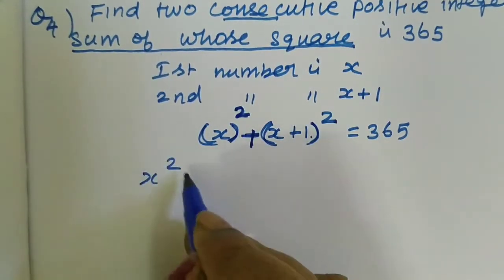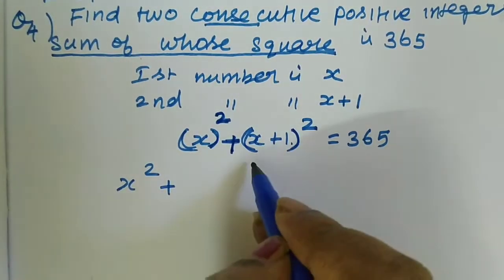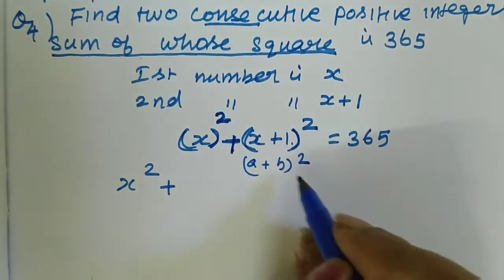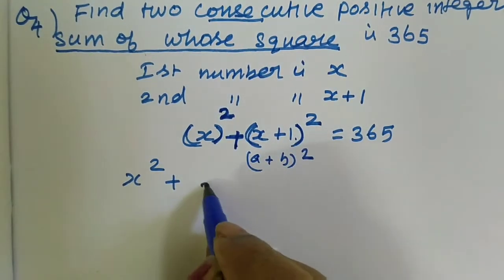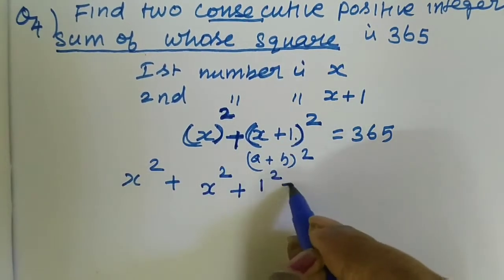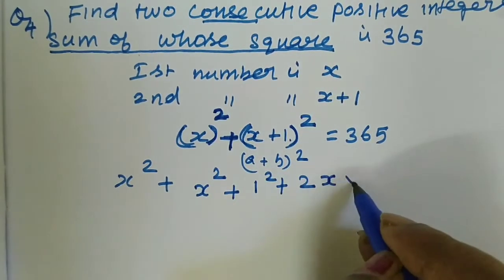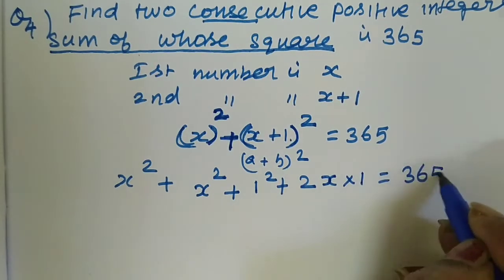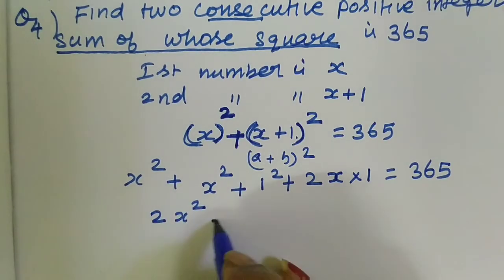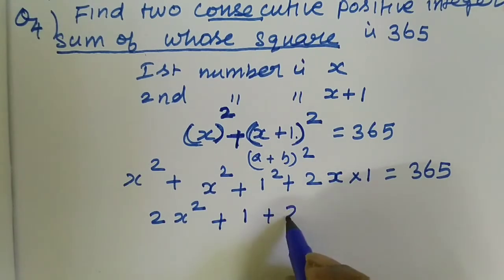This gives us x squared plus (x plus 1) whole squared equals 365. We expand using the (a plus b) whole squared formula, where the value of a is x and the value of b is 1. So x squared plus x squared plus 2x plus 1 squared, giving us 2x squared plus 2x plus 1.